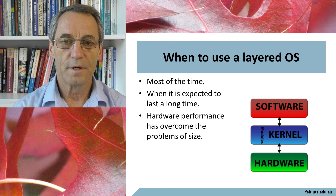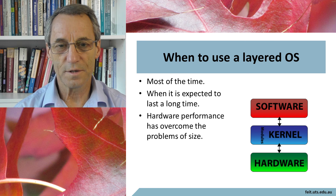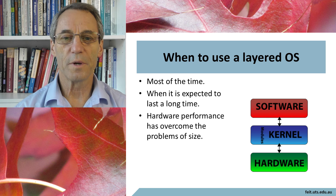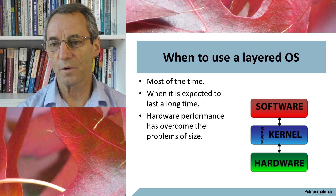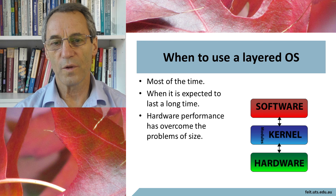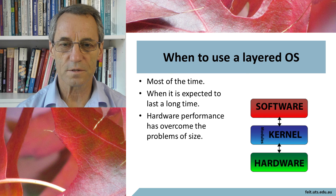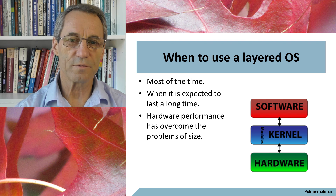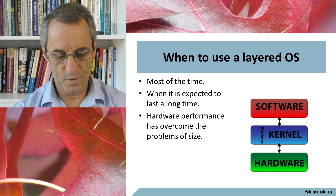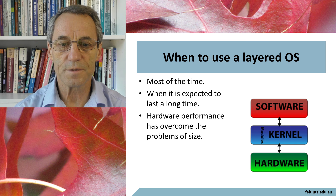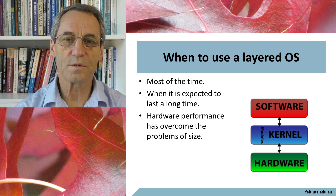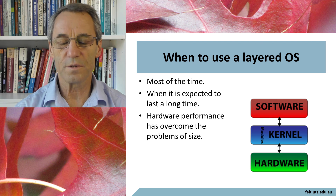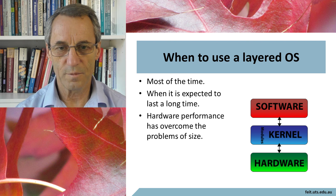When to use a layered operating system? Despite the many warnings against them, the answer is most of the time — when you expect to write an operating system and use it for a long time. Monolithic systems have been written to work on one family of chips, such as the Intel x86 family, and as those chips get bigger, the operating system doesn't have to be extensively rewritten. When hardware performance has overcome the problems of size, the trend now is not to use a specialized operating system but a general purpose one, because the speed of the hardware has overcome the performance problems that used to exist.